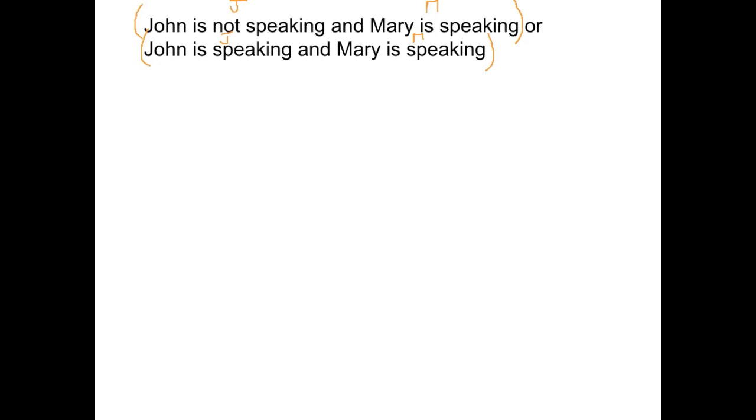So it says, if John is not speaking, so not John, and Mary is speaking. Then we've got our little or. Or, John is speaking, and Mary is speaking. Is equivalent to, let's just put that as F. So you just work through the sentence, and figure out what the expression should be.